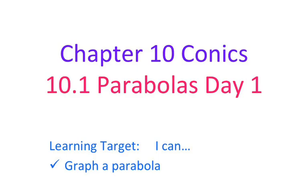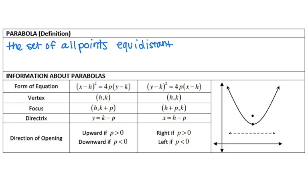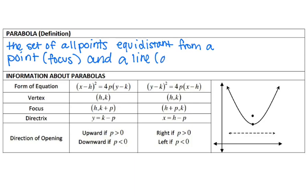So our first part for parabolas is actually having the definition. The mathematical definition of a parabola is the set of all points equidistant from a point, called the focus, and a line, which is called the directrix.